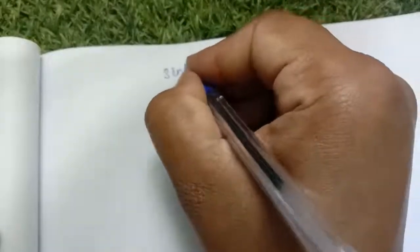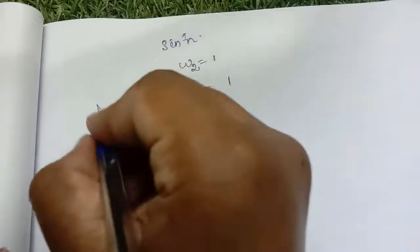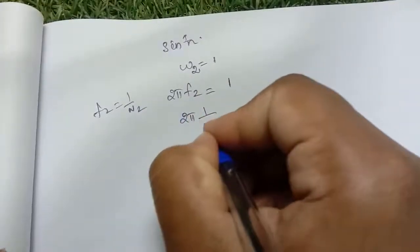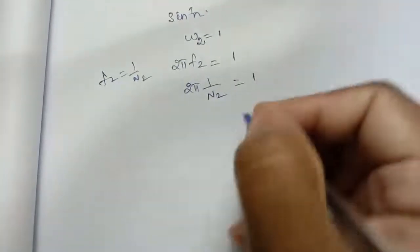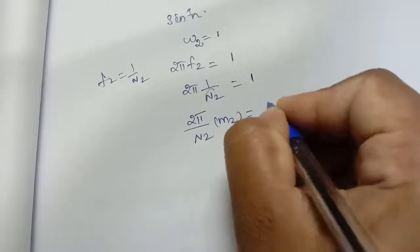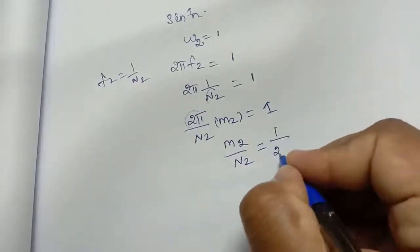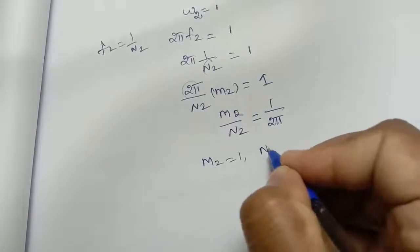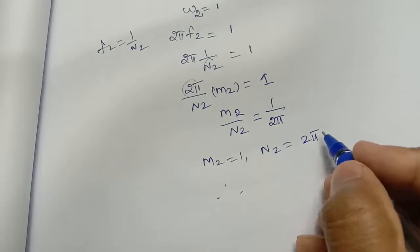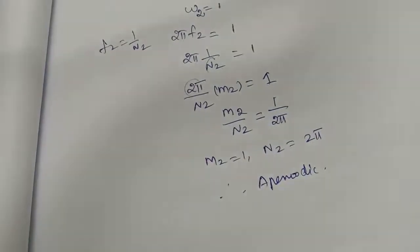Now for the second term, sin(n). Here ω₂ = 1. Using 2πf₂ = 1, we get f₂ = 1/N₂, so 2π/N₂ = 1. Multiplying: 2π·m₂/N₂ = 1, which gives m₂/N₂ = 1/(2π), so N₂ = 2π. Since N₂ contains the irrational number π, this does not yield a constant integer, and therefore this term is called an aperiodic signal. We will do more problems in the next classes. Thank you.